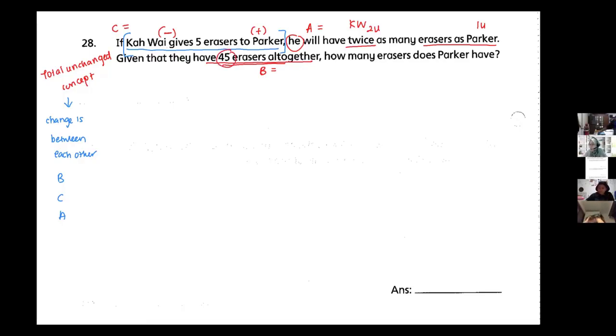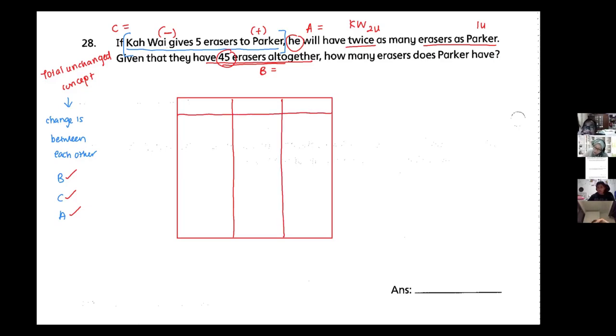How many erasers does Paka have? So I have underlined all the keywords: before is found, change is found, after is found. It's time for me to draw out my box. So I draw my box, make it a big one. Then we are going to cut it up into three columns. Why must it be three? Because Total Unchanged Concept, there is a total column at the side. So this is Kawai and this is Paka. Then the before, the change, and the after. Draw a line, draw a line, and we are ready to fill it up.